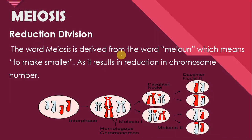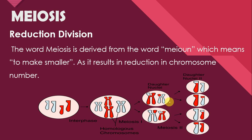The word meiosis is derived from the word 'meion' which means to make smaller. As a result of meiosis, daughter cells mein chromosome ka number parent cell ke muqable mein half reh jata hai. That's why we call it reduction division.